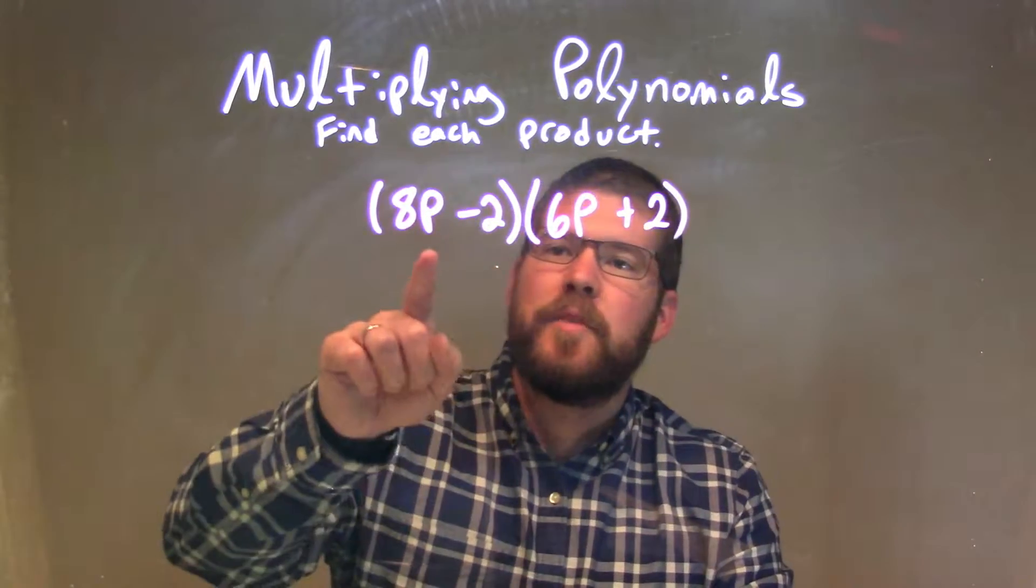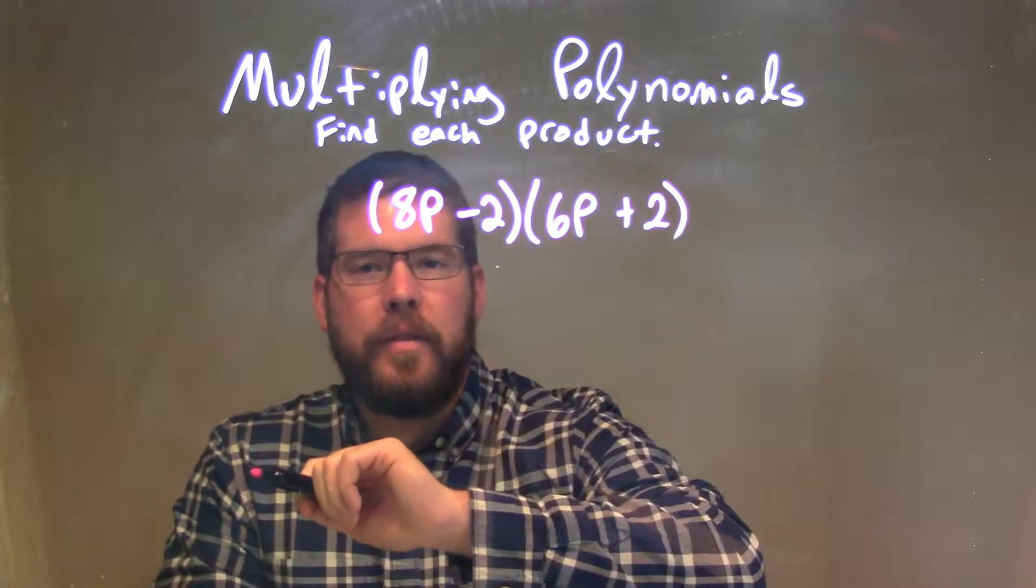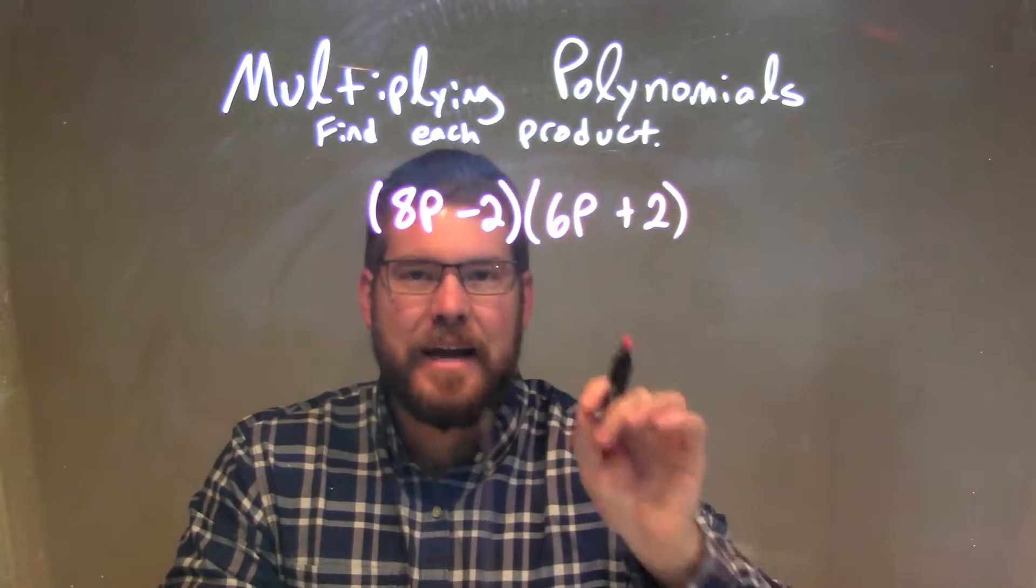Well, we cannot simplify anything within each parenthesis, so we're going to multiply all parts of my first parenthesis times all parts of my second parenthesis.